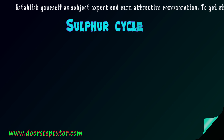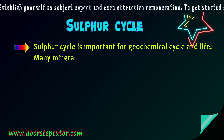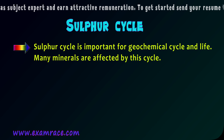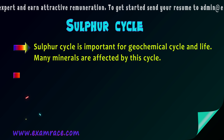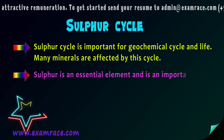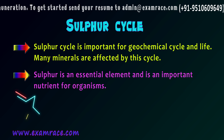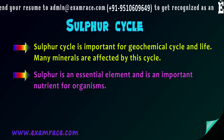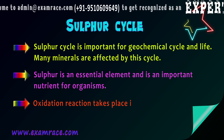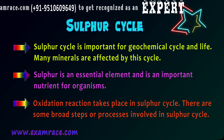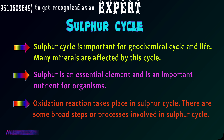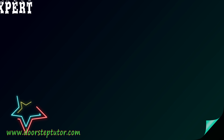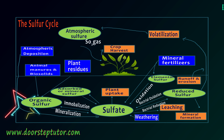The sulfur cycle is a very important cycle for the geochemical cycle and for life, because many minerals are affected by it. Sulfur is an essential element and an important nutrient for organisms. The sulfur cycle takes place by oxidation reactions, and there are many broad steps involving oxidation in this cycle.